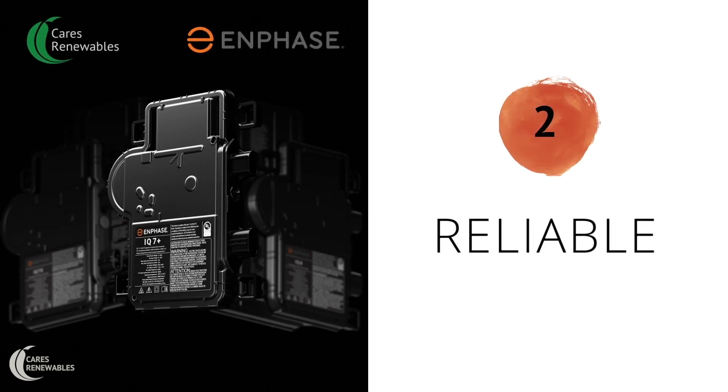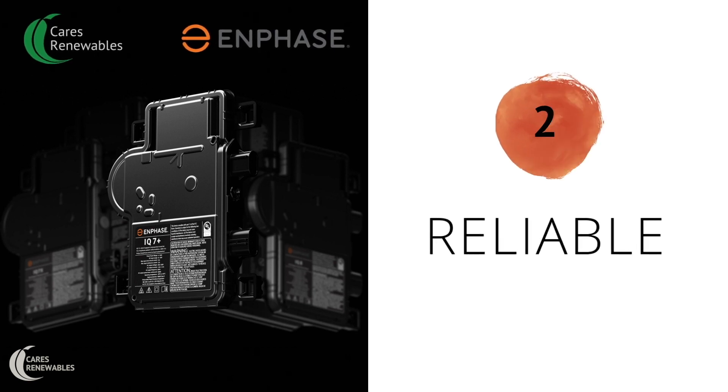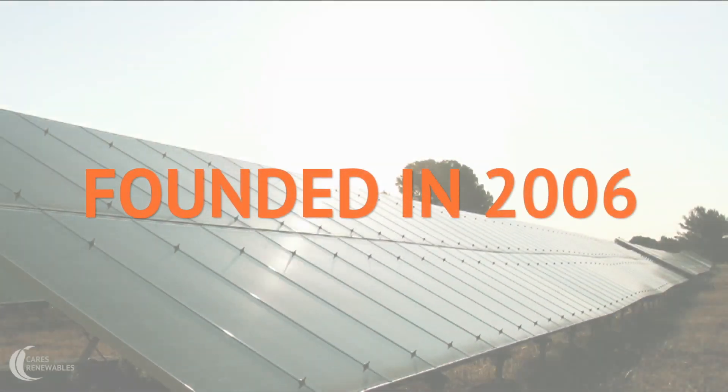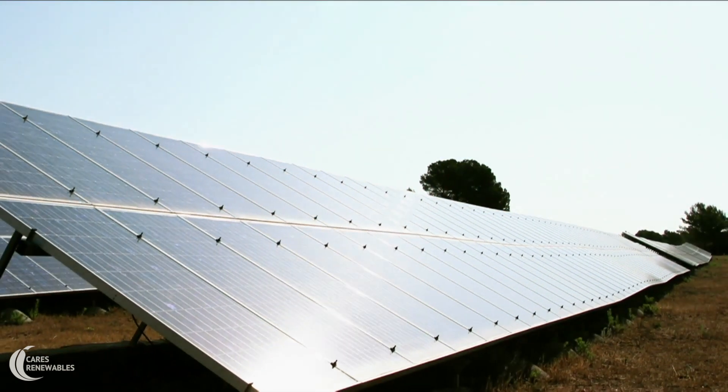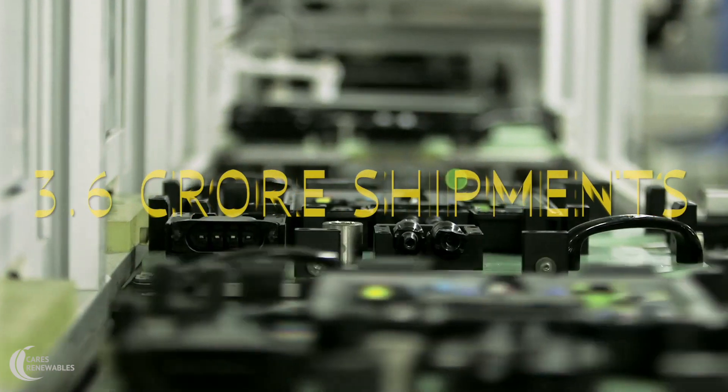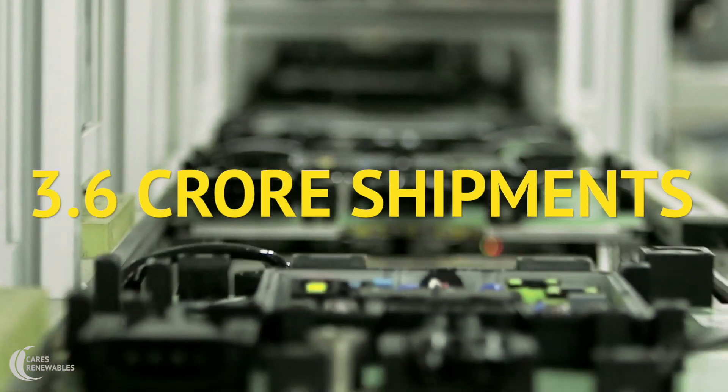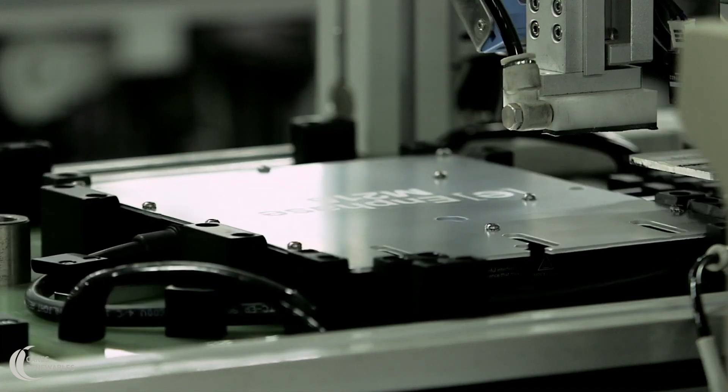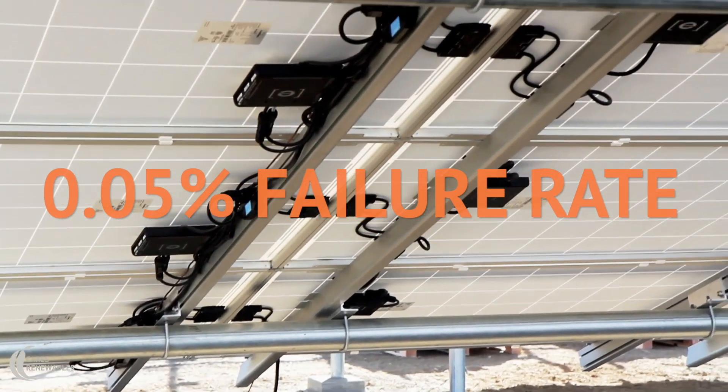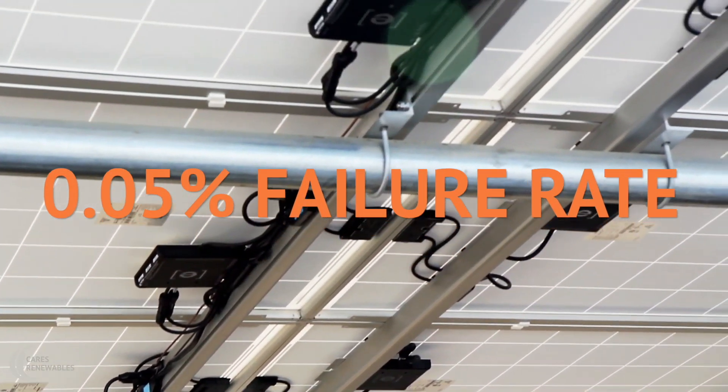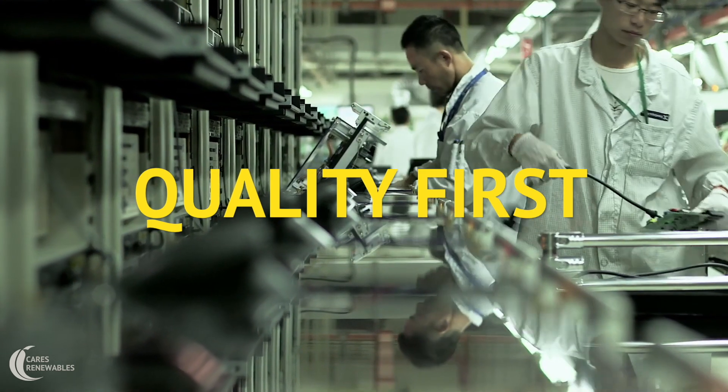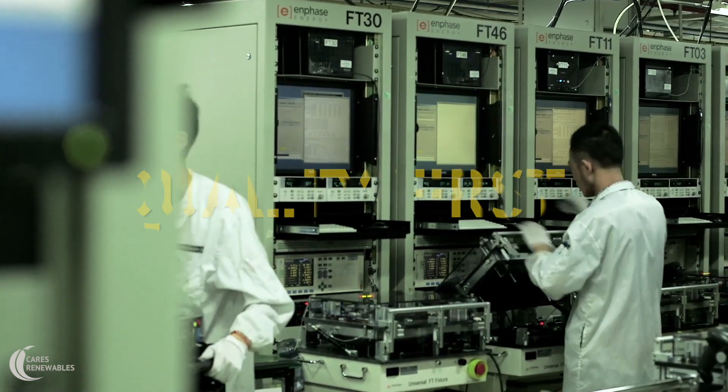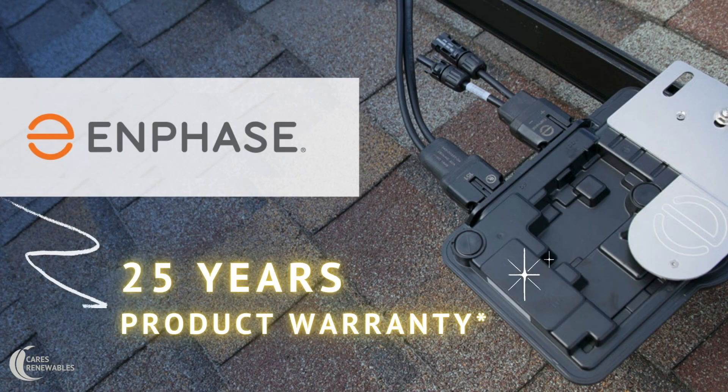Enphase is arguably the most reliable inverter in the world today. Enphase, founded in 2006, has more than 3.6 crore microinverters running in climate zones ranging from rainforests to deserts. Enphase has no single point of failure, and its target failure rate is lowest in the industry at 0.05%. Quality is embedded in every Enphase microinverter. That's the reason microinverters have the best product warranty in the industry at 25 years.